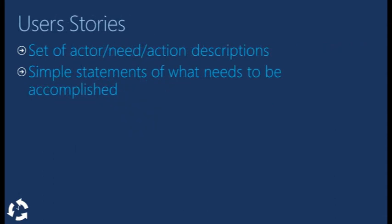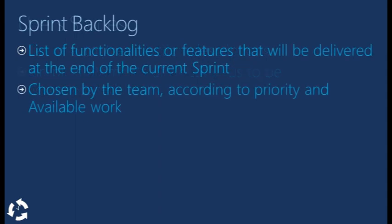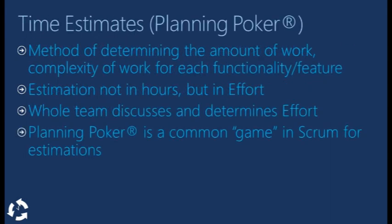User stories are simple ways of creating requirements based on an actor, a need and an action. The sprint backlog is a list of all the features that will be delivered in that sprint, taken from the product backlog and picked by the development team. There is a lot to be said about time estimates as it deserves a video of its own. For now let's just make it clear that estimation efforts are determined by complexity and not by hours of work.